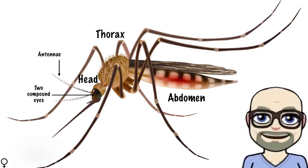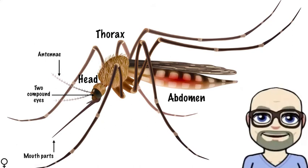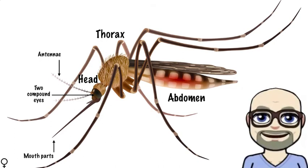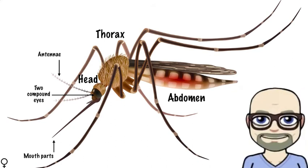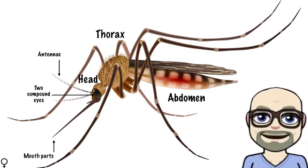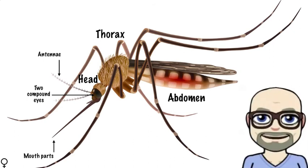The head contains antennae and mouthparts. Sensing movements in the air, antennae are hypersensitive so as to allow a male to differentiate between a female's wing beat and that of another male. The male's mouthparts allow for nectar feeding, while the female's mouthparts allow penetration to capillary beds and robust blood feeding.